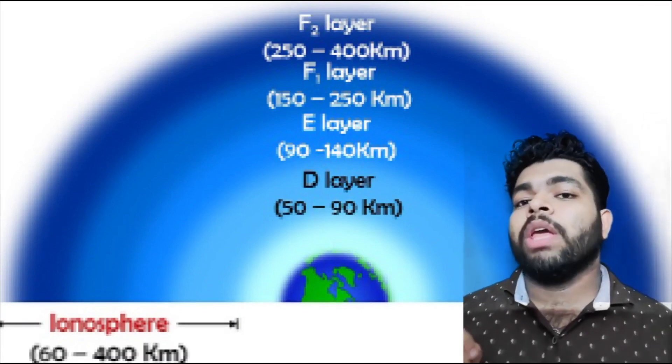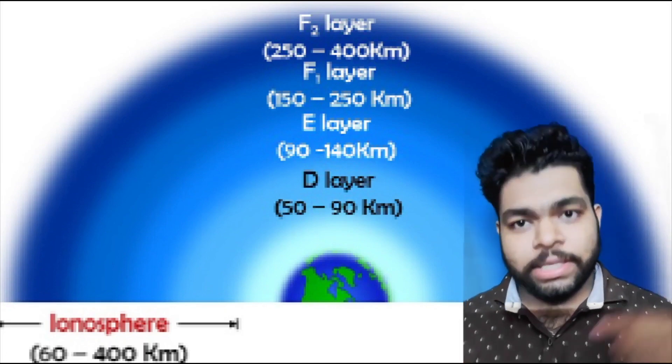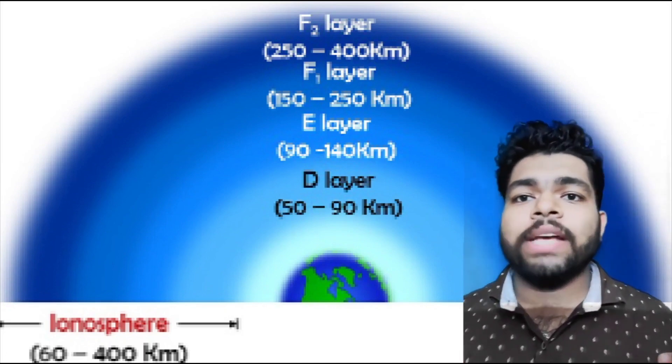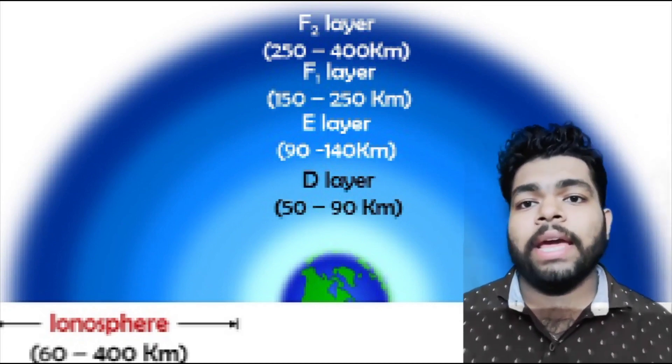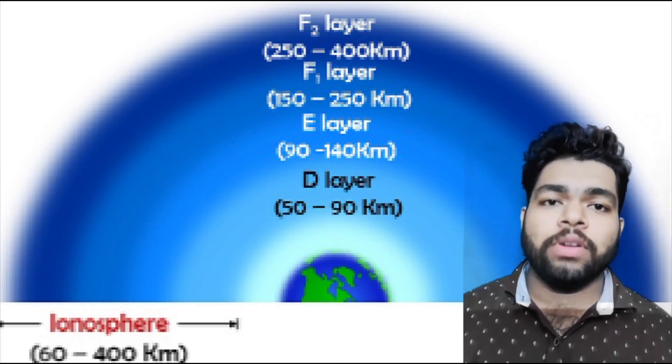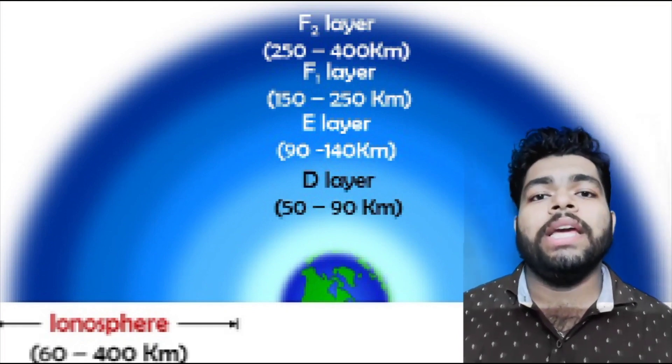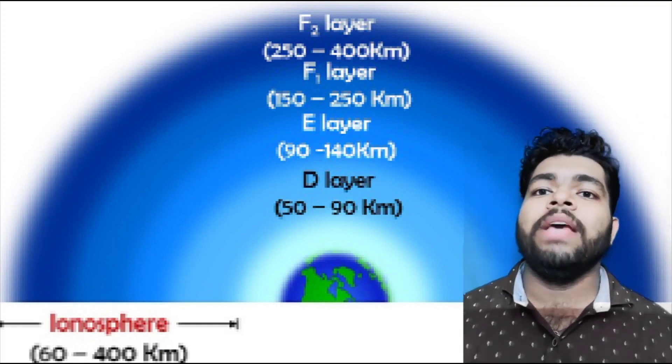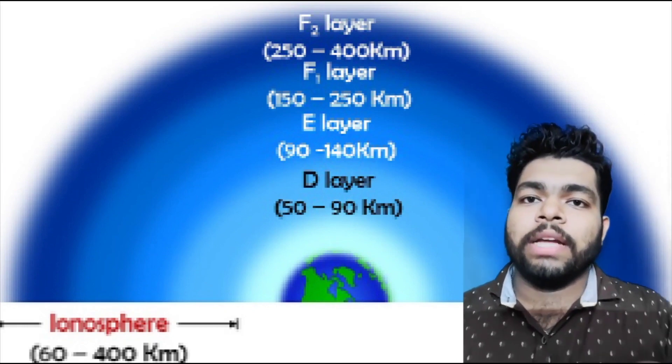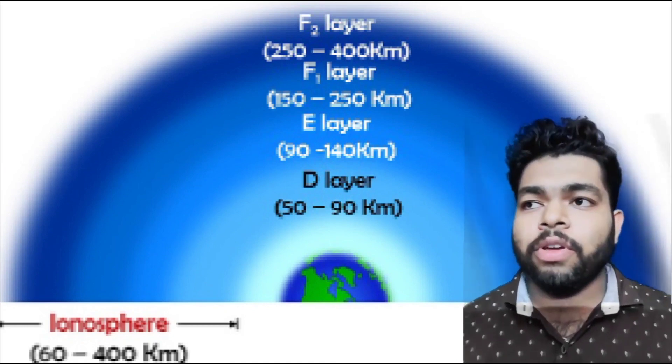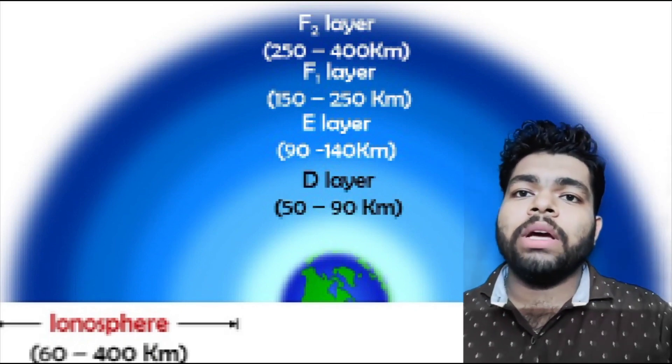The normal E region is a narrow layer of ionizations, also called the Kennelly-Heaviside layer, which can be observed in daytime only. The critical frequencies of E layer lie in the range of 3 to 5 megahertz and can be used for transmission of high frequencies and MF.